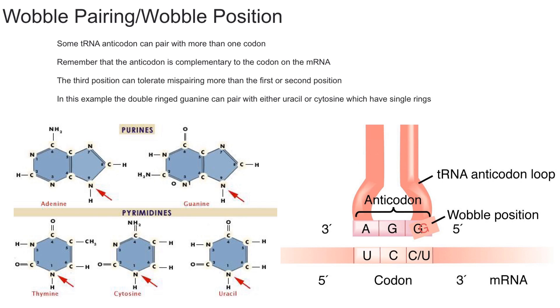However, the wobble hypothesis is saying that some tRNA anticodons can pair with more than one codon. In this situation, it's more likely that the third position can tolerate mispairing more than the first or second position.